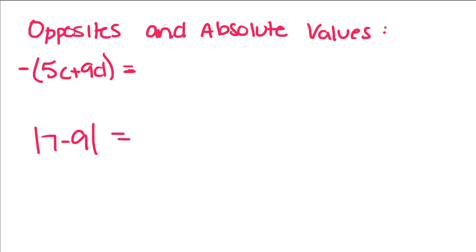Today we're going to talk about opposites and absolute values. The opposite is when you take the opposite sign of something. So say you had positive 5 — if you took the opposite of it, you would have negative 5. When you take the absolute value, which is indicated by these bars right here, you take the positive value. So opposite is just the opposite value, and absolute means the positive value.